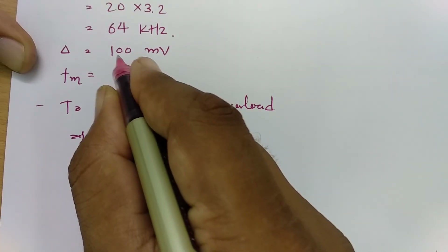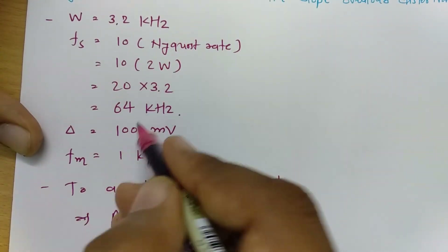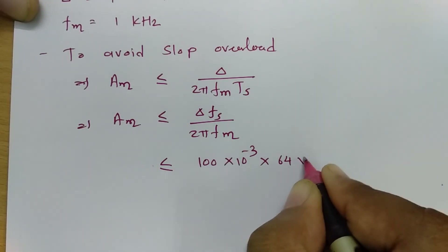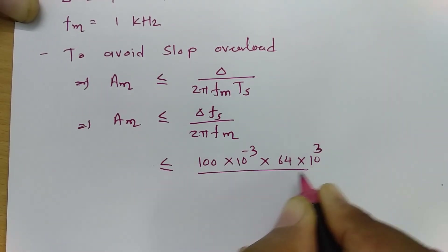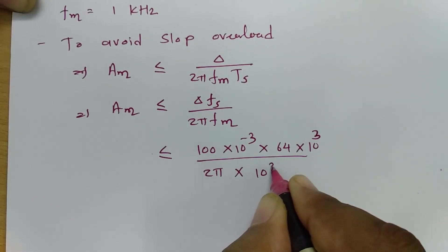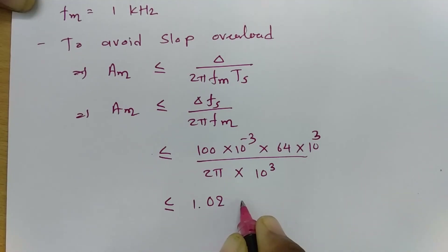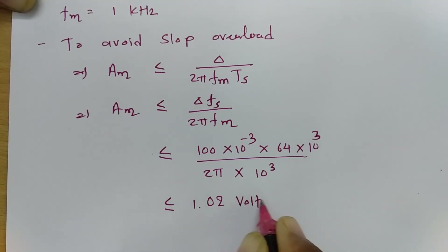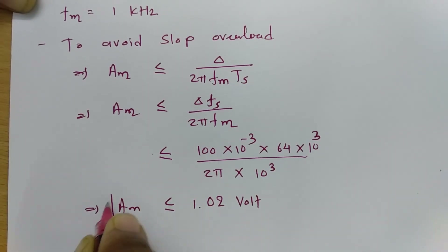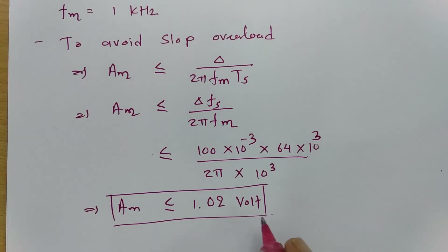Placing all values: delta is 100 millivolt, fs is 64 kilohertz, divided by 2π multiplied by fm which is 1 kilohertz. Solving this gives Am ≤ 1.02 volts. So the maximum amplitude of the test signal must be lower than 1.02 volts to avoid slope overload distortion.